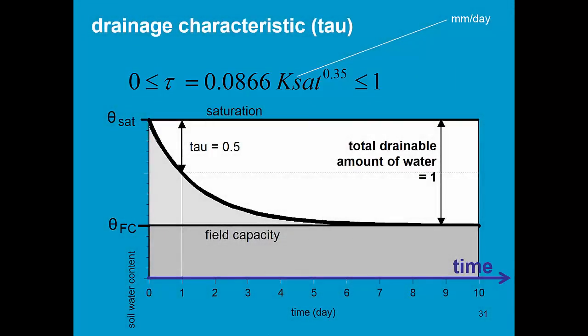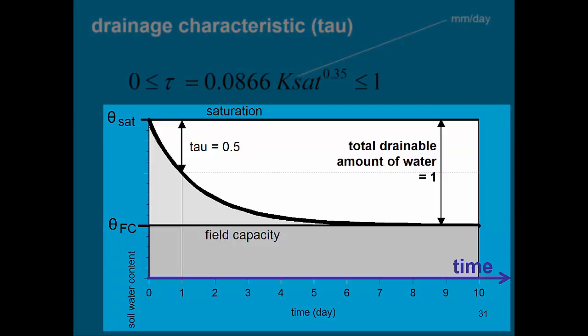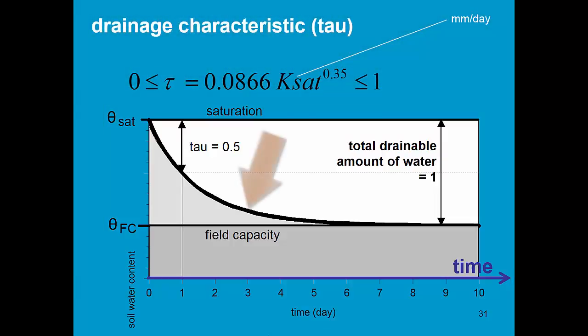In AquaCrop, drainage is simulated with an exponential curve which shows the variation in function of time of the soil water content between saturation and field capacity. The shape of the curve is determined by the tau value. Tau expresses the fraction of the total drainable amount of water which can be drained on the first day.